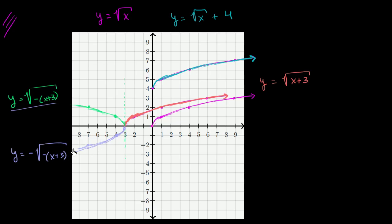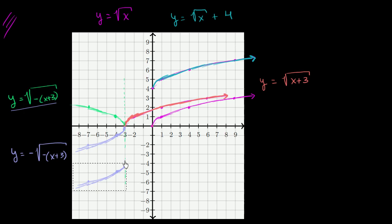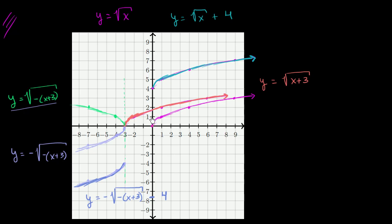And if we wanted to shift that thing, we could just add or subtract something outside of the radical. Let's say we wanted to shift it down so instead of beginning at y equals 0, we're at y equals negative 4 — then we subtract 4 outside the radical. So that would be y equals negative square root of negative x plus 3, minus 4. We could keep going on and on, but hopefully this gives you a sense of the different ways you can manipulate this, and we'll do more examples to get a better understanding.